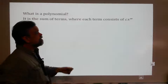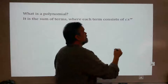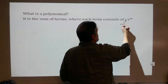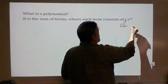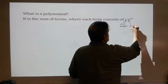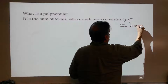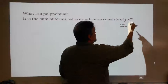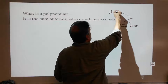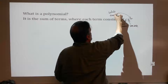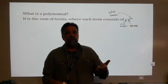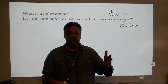What's a term? A term looks like this. It's got three parts to it. It's got the coefficient, which is a real number. It's got x, or some variable. And then it's got an exponent — x to the something. And that exponent has to be a whole number: zero, one, two, three, et cetera. Those are the whole numbers.